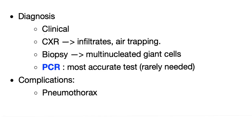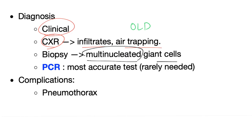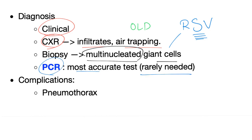How to diagnose acute bronchiolitis clinically? Chest X-ray shows infiltrates and air trapping — because it's an obstructive lung disease. Biopsy will show multinucleated giant cells — that's why we call the virus respiratory syncytial virus, because it forms a syncytium, which is a multinucleated giant cell. PCR is the most accurate test but is rarely done, because this is a clinical diagnosis.